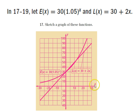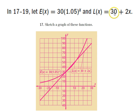The function L of x equals 30 plus 2x is a straight line because it's in slope-intercept form, where the y-intercept is 30. When x is 0 in L of x, L of x is 30 — so the point (0, 30) is on the graph, and you'll notice that the straight line crosses the y-axis at 30.